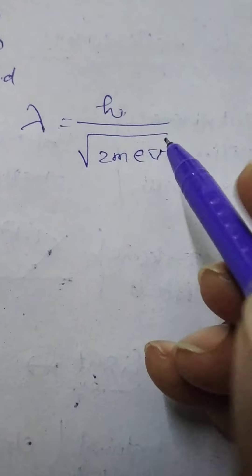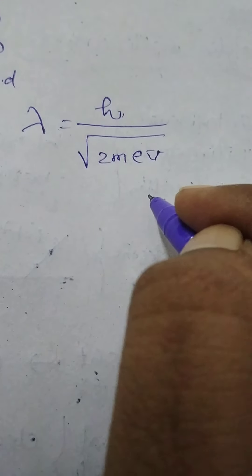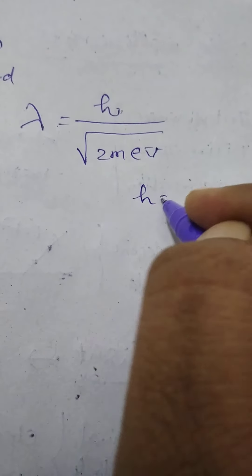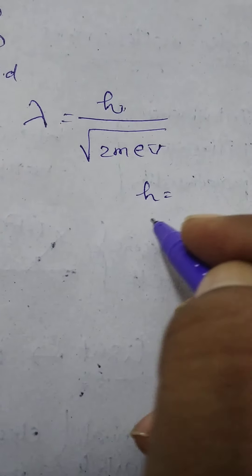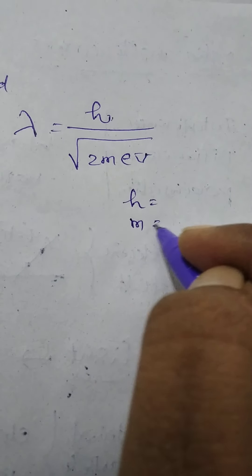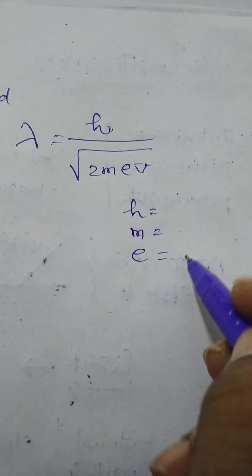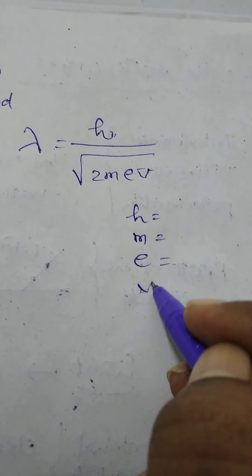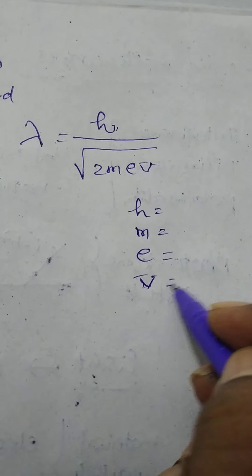Here, h is equal to Planck's constant, m is equal to mass of the particle, small e is equal to charge on the particle, and V is equal to potential difference.